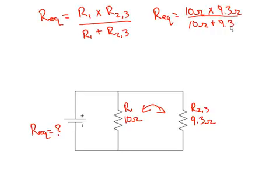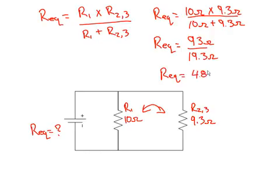So R equivalent equals 93 ohms divided by 19.3 ohms. So R equivalent equals 4.82 ohms.